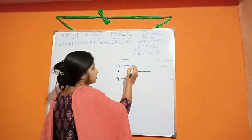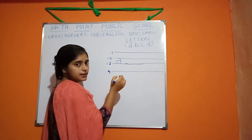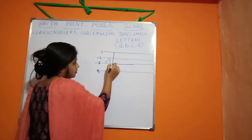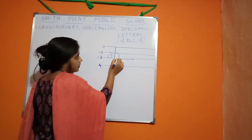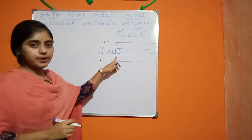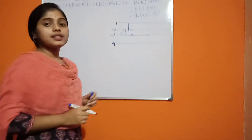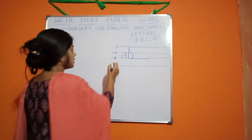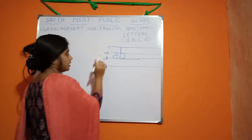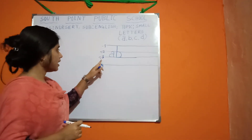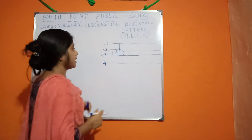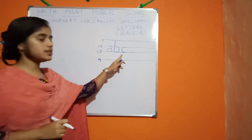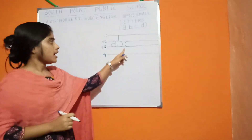Now B. To write B we need the first rule, the second rule and the third rule — we need 3 rules. At first the standing line, then the curved line. This is B. Next C. To write C we need the second rule and the third rule, like A. This is C.